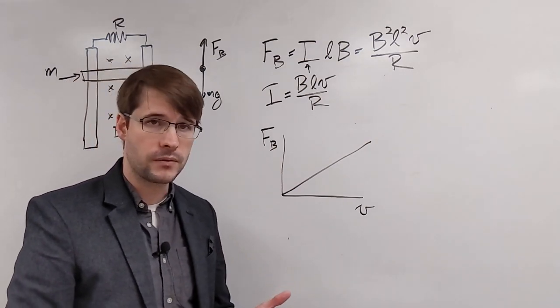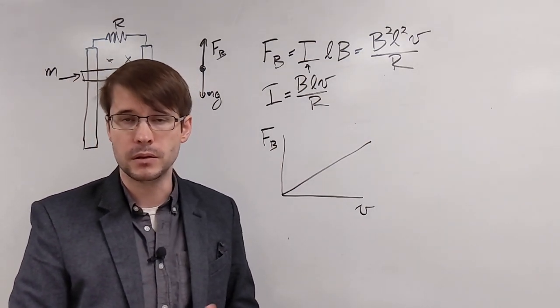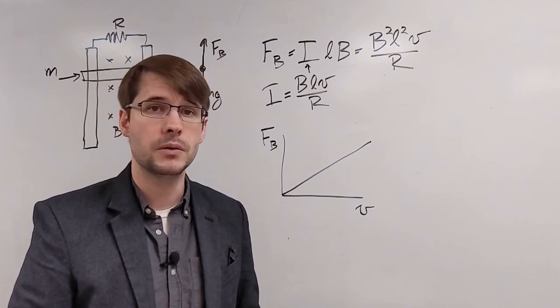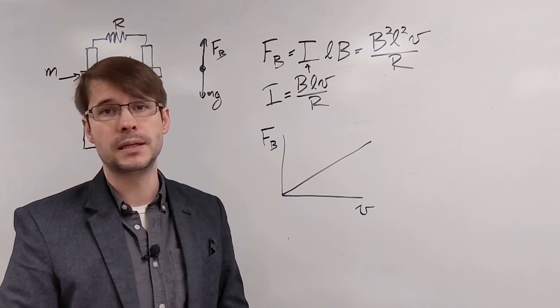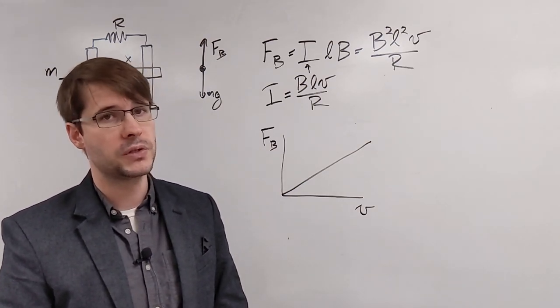If this object is going very quickly, then the upward force would be large and probably larger than the weight. If it was not moving at all, then this force would be zero and the object would be accelerating downwards 9.8 meters per second squared due to gravity.